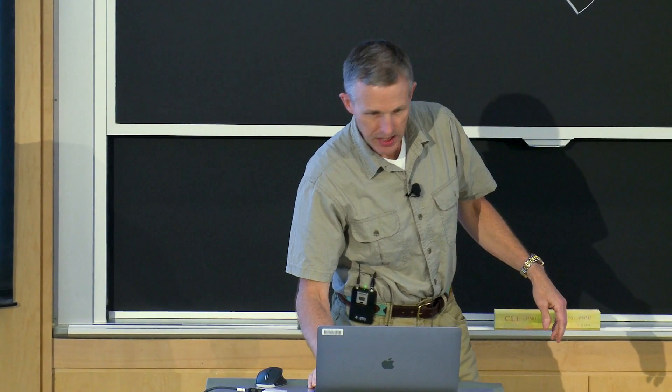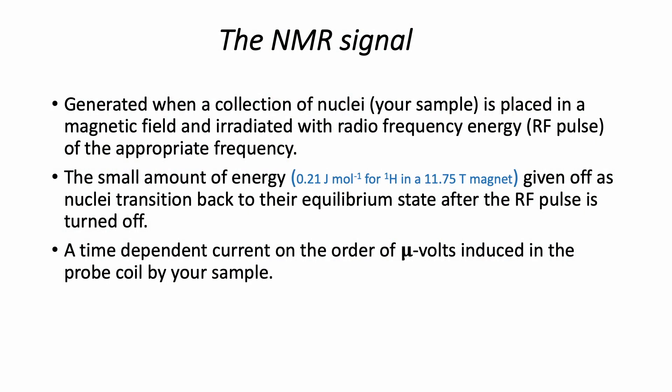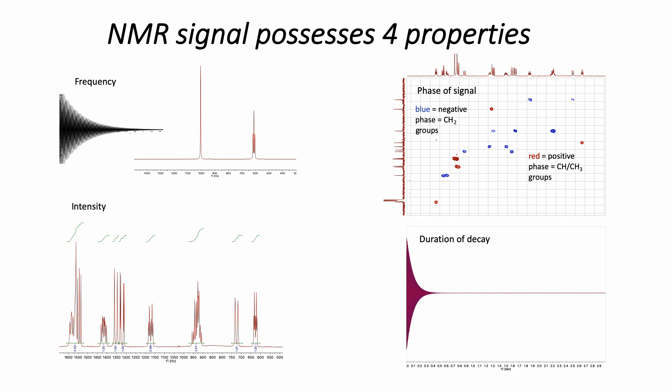The NMR signal is generated when a collection of nuclei placed in a strong magnetic field is irradiated with radio frequency energy of the appropriate frequency. The signal is a very small amount of energy given off as the nuclei transition back to their equilibrium state — a time-dependent current induced in the coil on the order of microvolts. An actual NMR signal is called a free induction decay; it's a damped sinusoid with four properties we make use of.